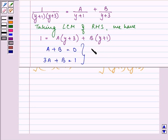we have the value of A equal to 1 upon 2 and the value of B is minus 1 upon 2.